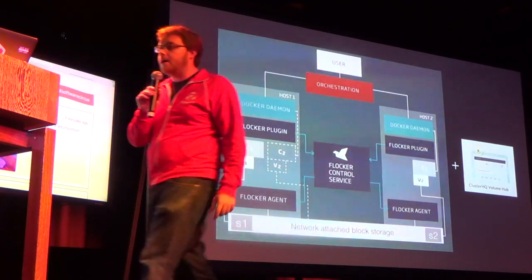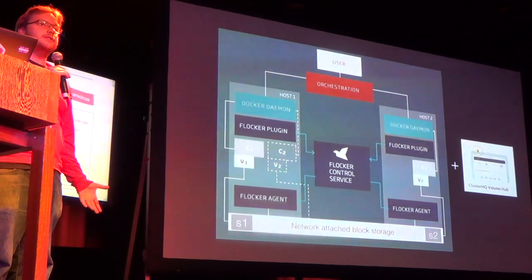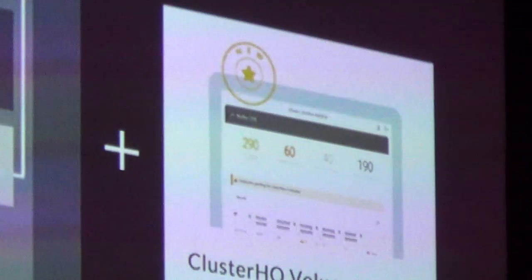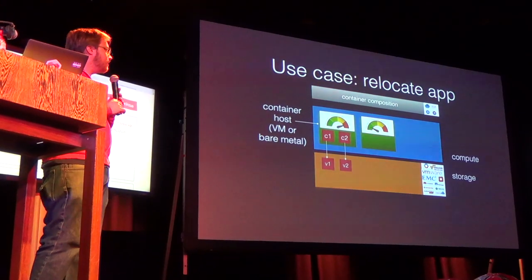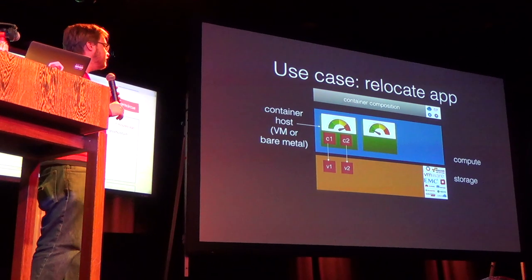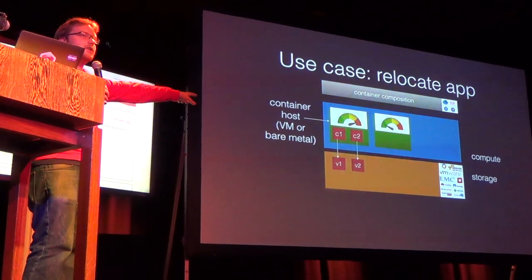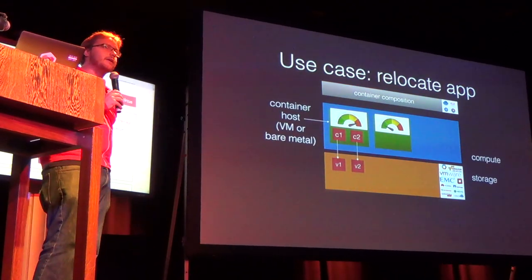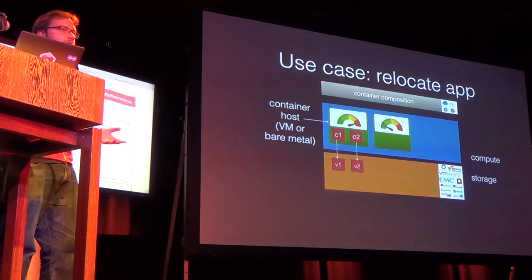Flocker integrates downwards with different storage systems — we've integrated with Amazon EBS, Persistent Disk on Google, Dell, HP, EMC, Nexenta, and other on-premise storage vendors who have written Flocker drivers. We're also working on a Ceph driver. The user might use an orchestration framework like Mesos talking to Docker daemons, with a Flocker plugin that coordinates with the control service to move container C2 with volume V2 from one host to another. The Volume Hub is a hosted web interface where agents push metadata about which containers are running which volumes.